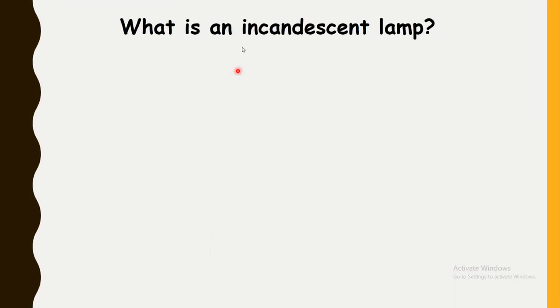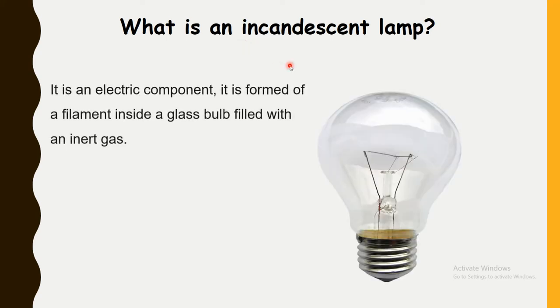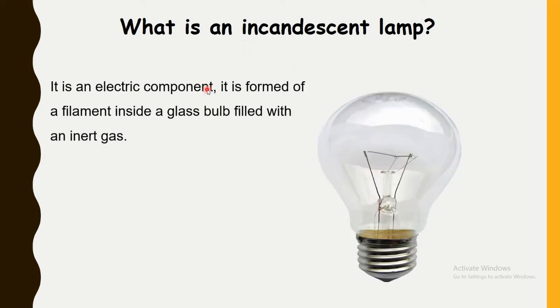What is an incandescent lamp? It is an electrical component. It is formed of a filament inside a glass bulb filled with an inert gas. Why inert gas? To prevent the combustion.